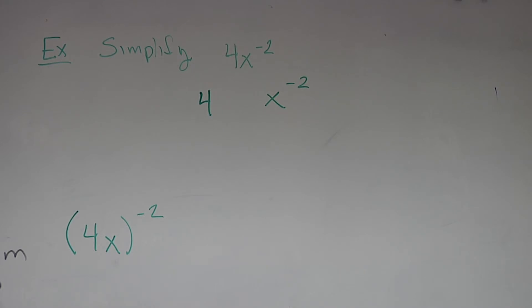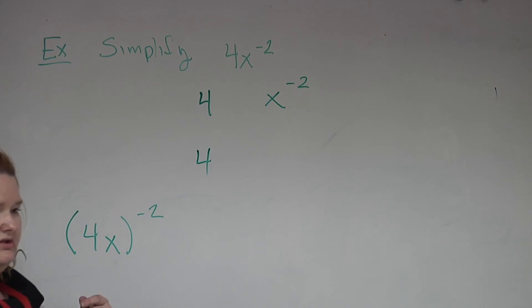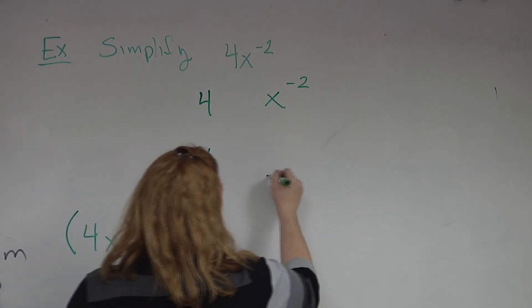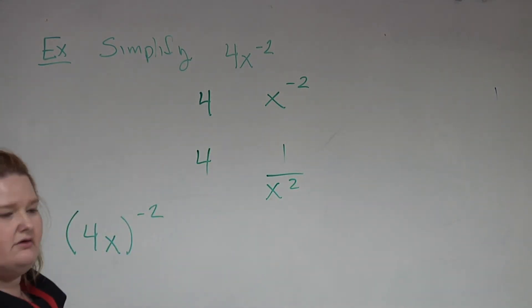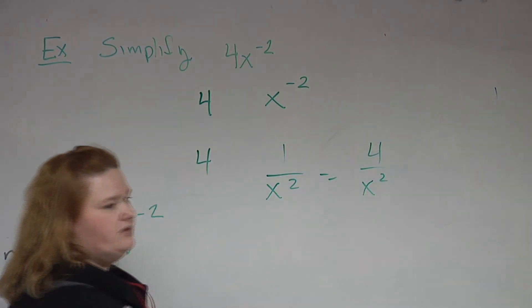What about the x? Where does it, what happens to it? It flips. Why? Because of the negative. So the 4 stays, and what is the x to the negative 2 going to be? X squared. But where is it? On the bottom. So what's on the top? The 4. We're going to do a 1, and then we'll blend them together. So then this will become 4 over x squared.